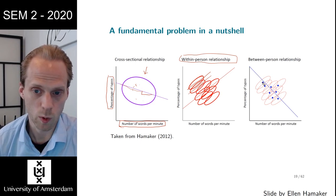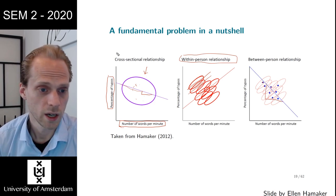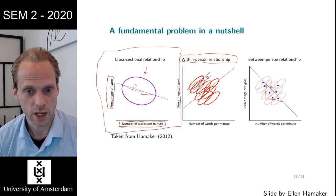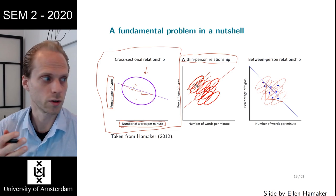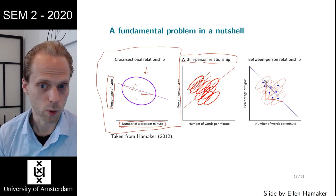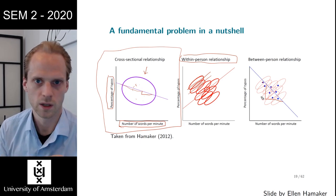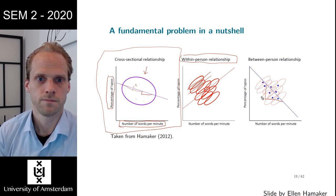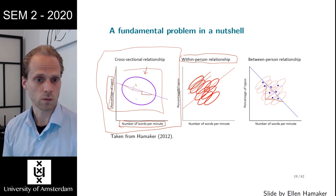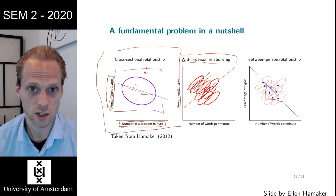The between-person relationship is based on stable means, and that slope might actually be very negative. So the cross-sectional relationship ends up somewhere in between. Within a person, typing faster than their own average leads to more errors. But between people, someone who types fast on average makes fewer errors because they are more experienced — perhaps people who type for a living. In a cross-sectional design you can't distinguish these two effects, which is why people like panel data or time series designs that allow you to model each person separately.